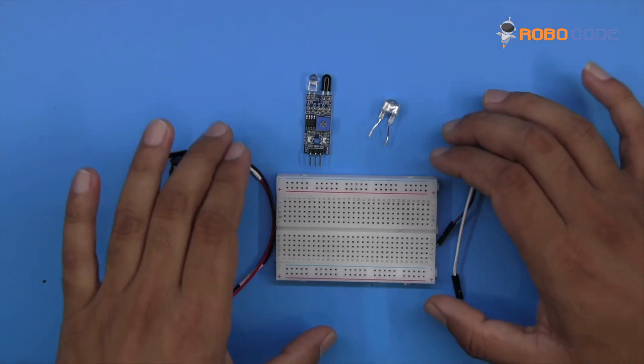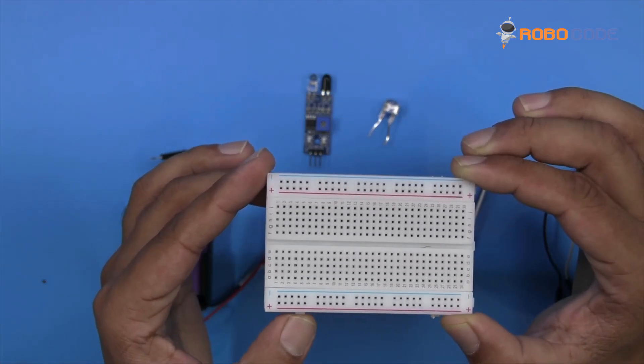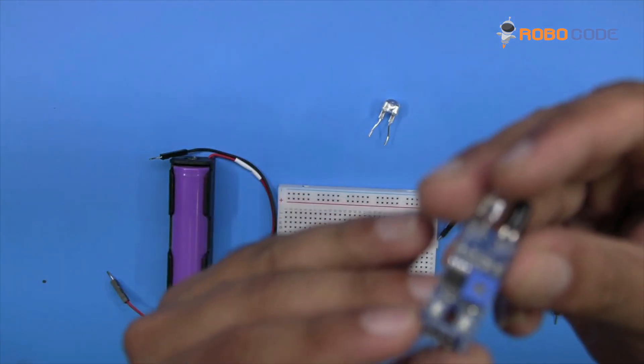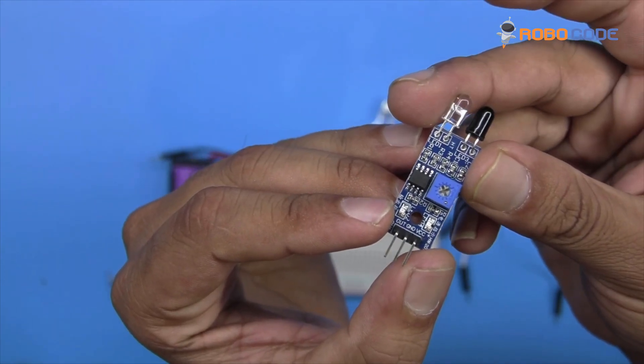In order to carry out this circuit, we will require one breadboard with 400 pins and one IR sensor, as you can see in this video.